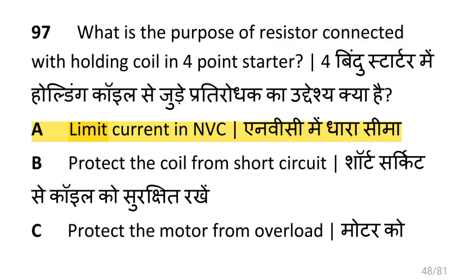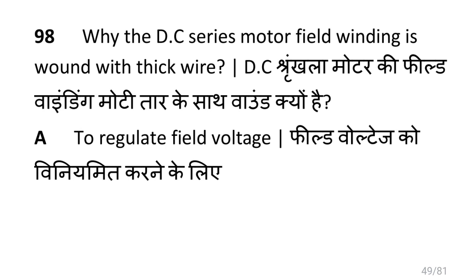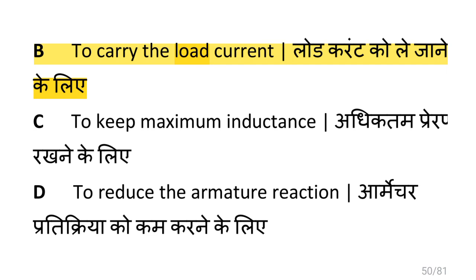What is the purpose of the resistor connected with the holding coil in a 4 point starter? That is to limit the current in the no-volt coil (NVC). Why is the DC series motor field winding wound with thick wire? That is to carry the load current.